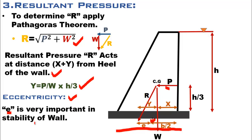The most important factor for stability of retaining walls is eccentricity, denoted by e. Eccentricity is the distance from half of the base (b/2) to the point where the resultant R cuts the base. The formula is e = (x + y) − b/2. The stability of the entire wall depends upon this value, and it will be discussed further under the conditions of stability.